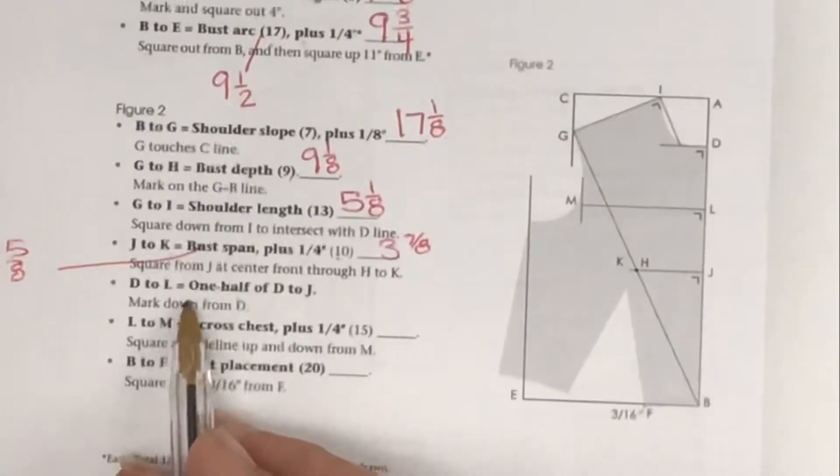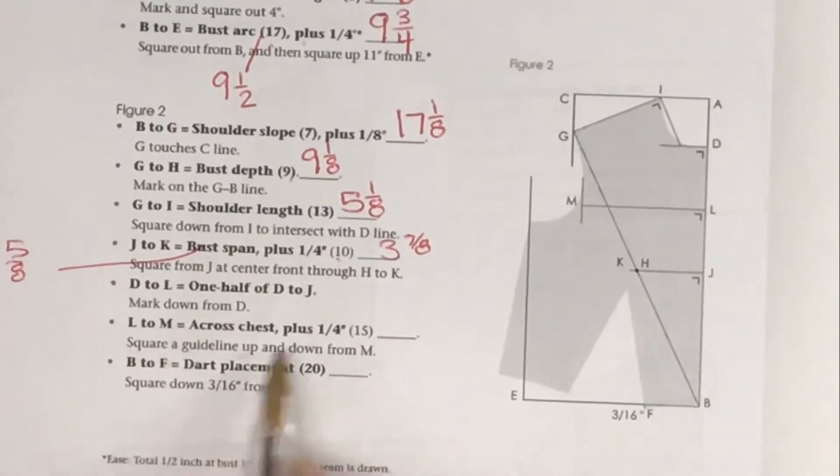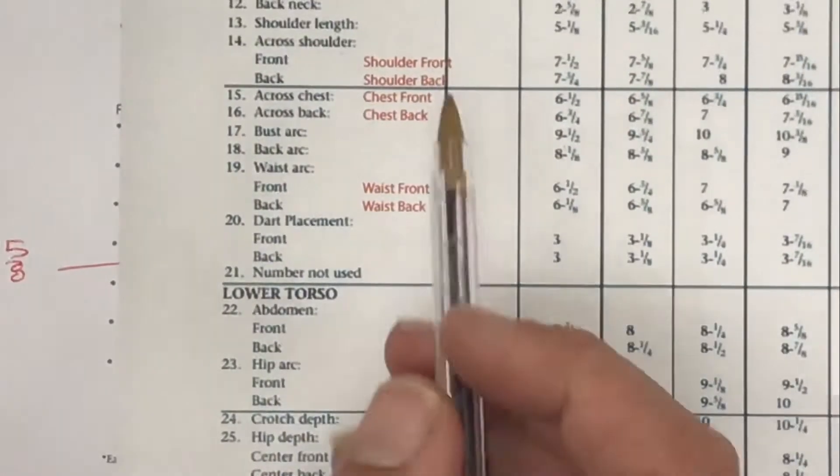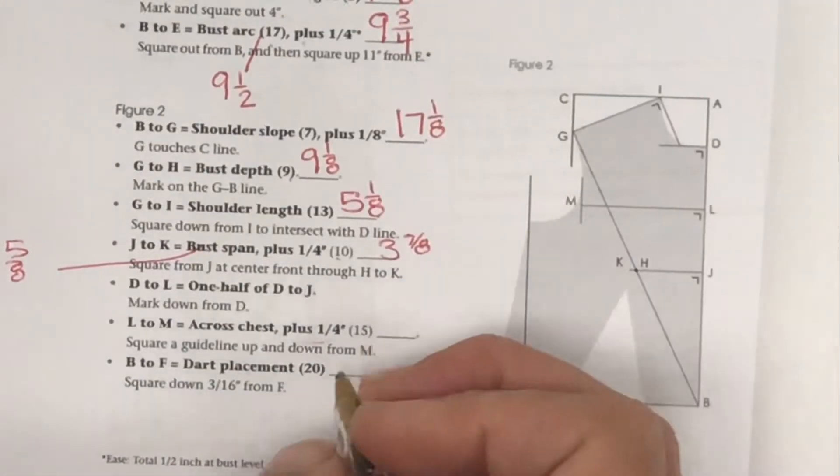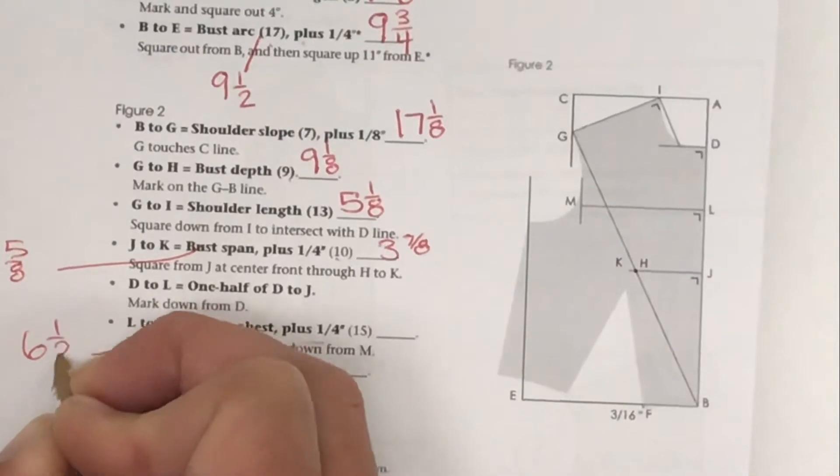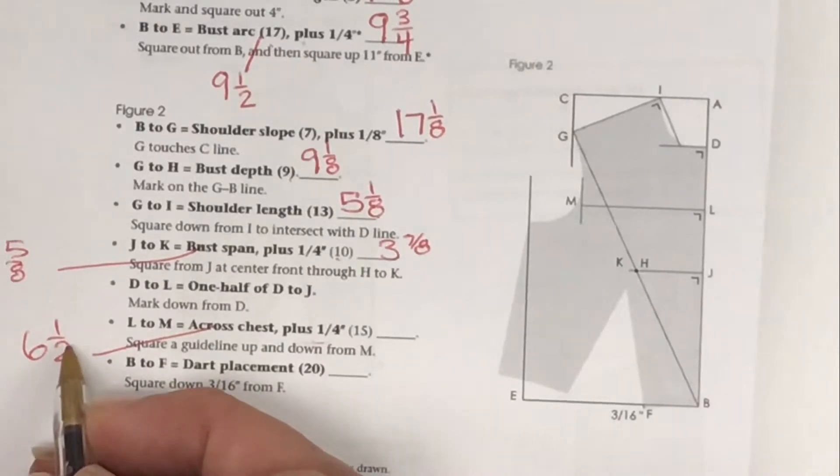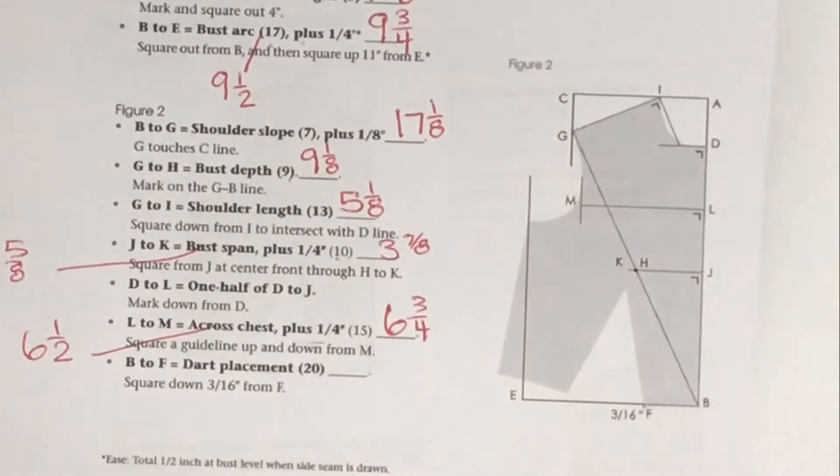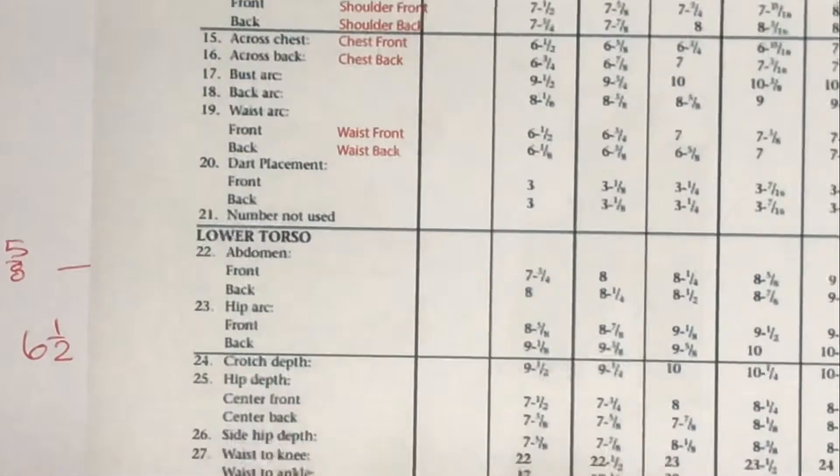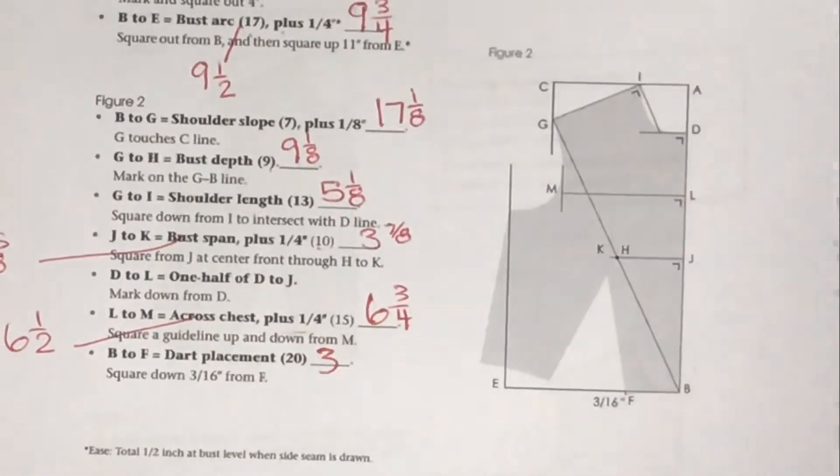There's no measurement here, so we can skip that bullet point. Across chest, that's number 15. We have math again, we have to add 1/4. Across chest, number 15, front: 6 and 1/2. Let's just write across chest is 6 and 1/2 plus 1/4. 1/2 is 2/4, so 2/4 plus 1/4 is 3/4. The answer would be 6 and 3/4. Dart placement, number 20, is 3. No math there, fabulous. That's page one.